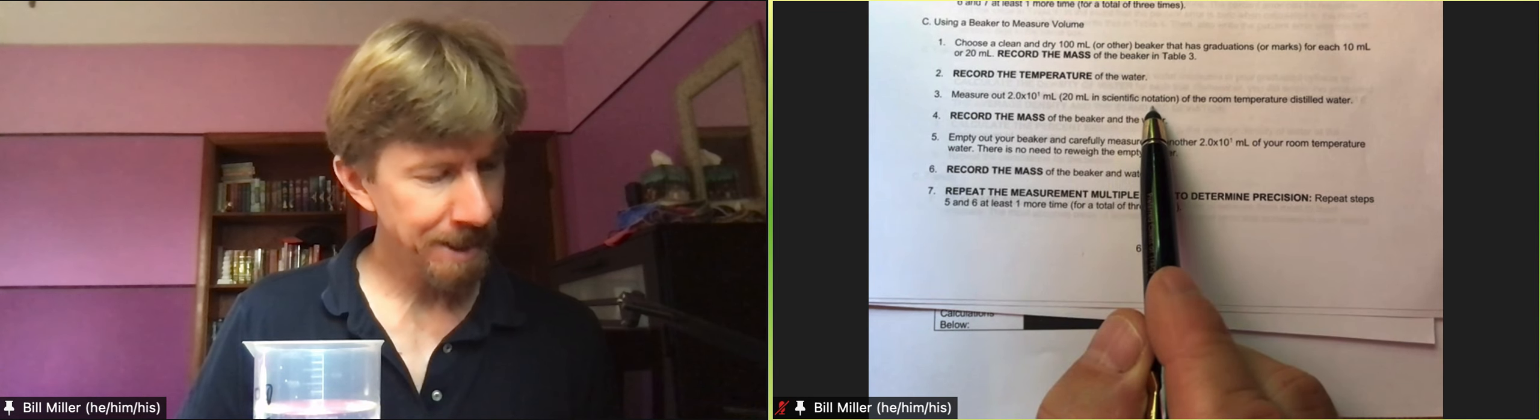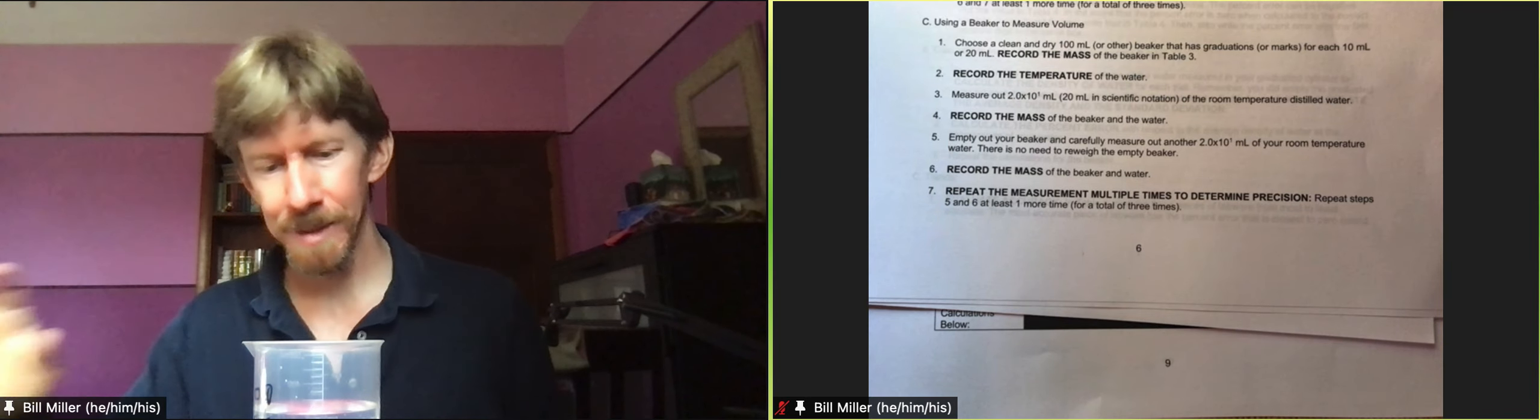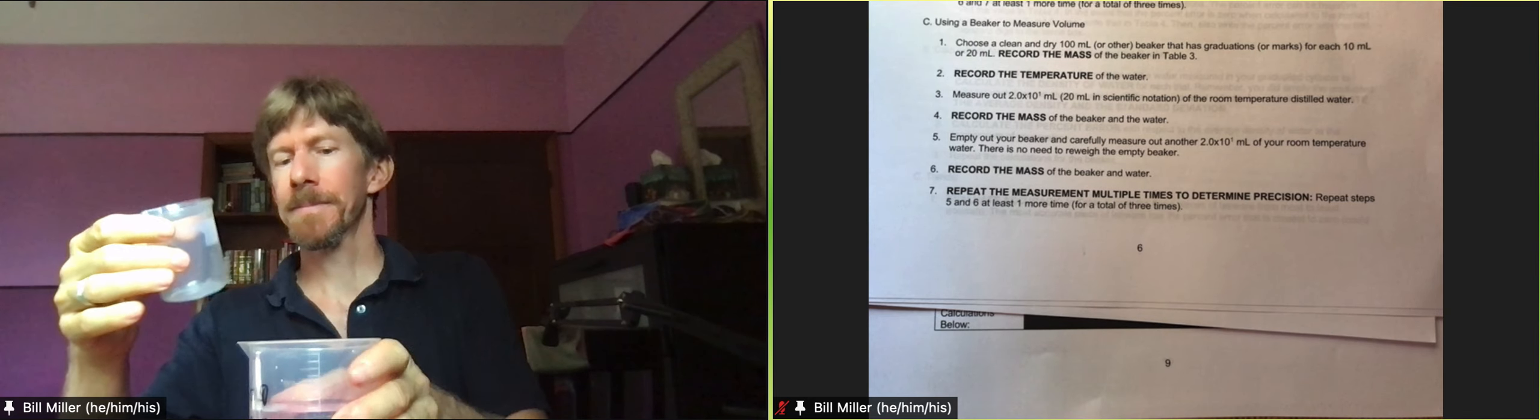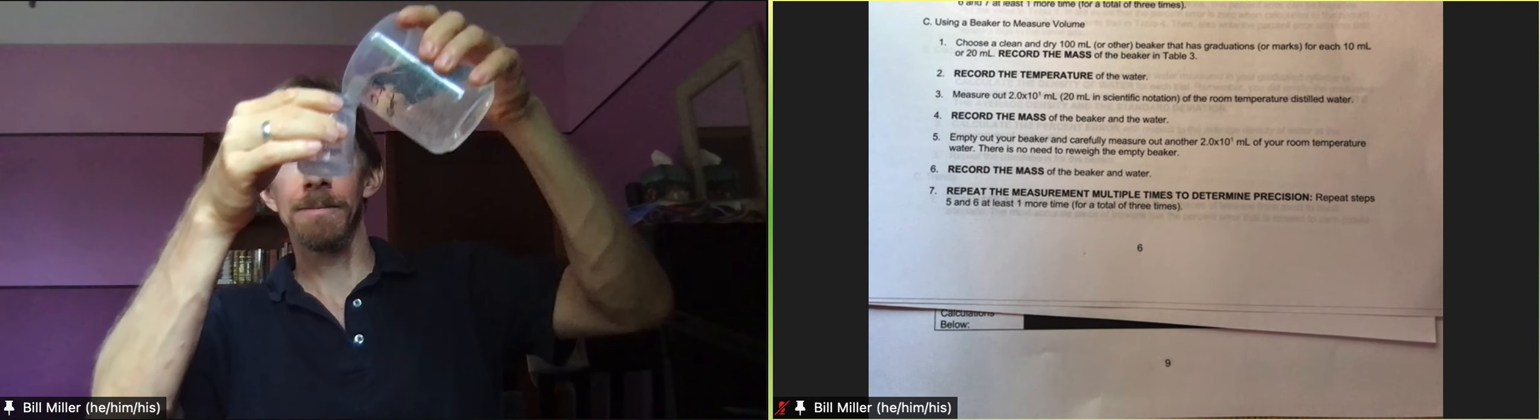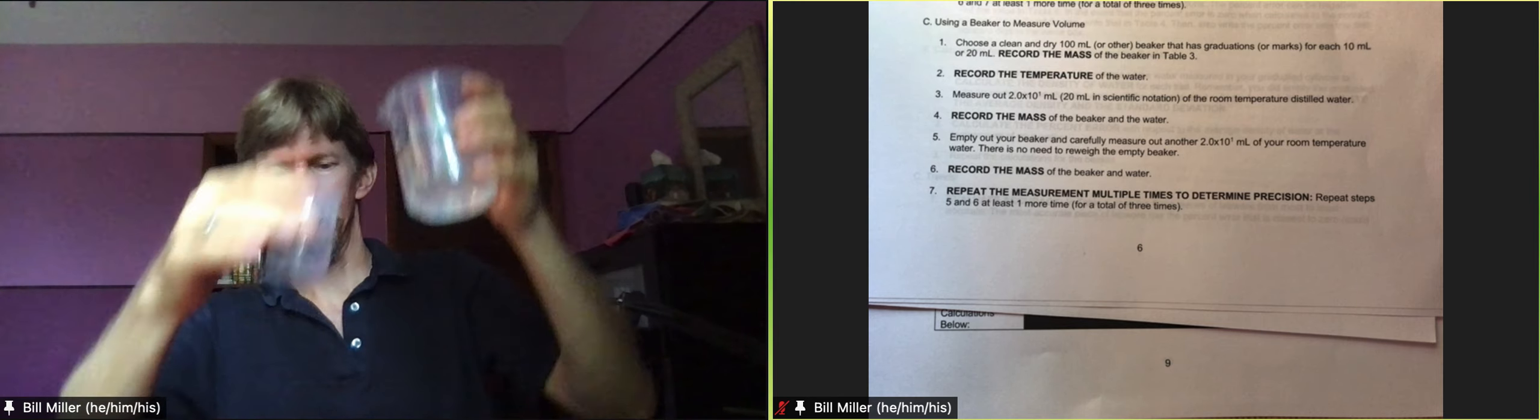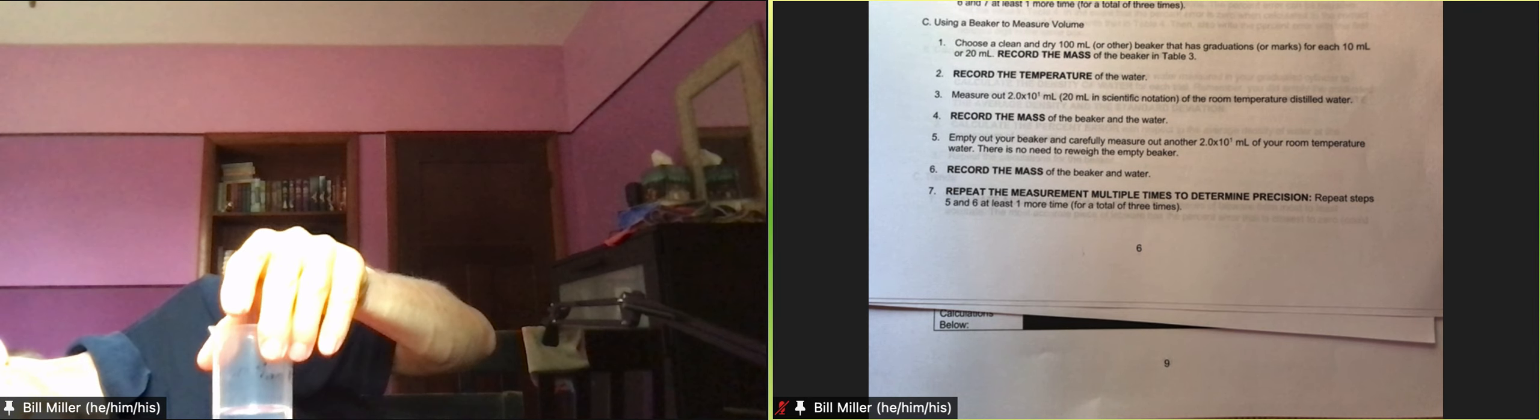And I've written it in scientific notation so that you know it has two significant figures. It's really 20 milliliters in scientific notation of the room temperature distilled, or in my case, tap water. So I've got it right here. I've got my beaker. I'm going to pour in 20. I'm going to look straight across while I do it. And I'm going to double check by looking down here on the side. When I hold it up, I can't really see that flatly.